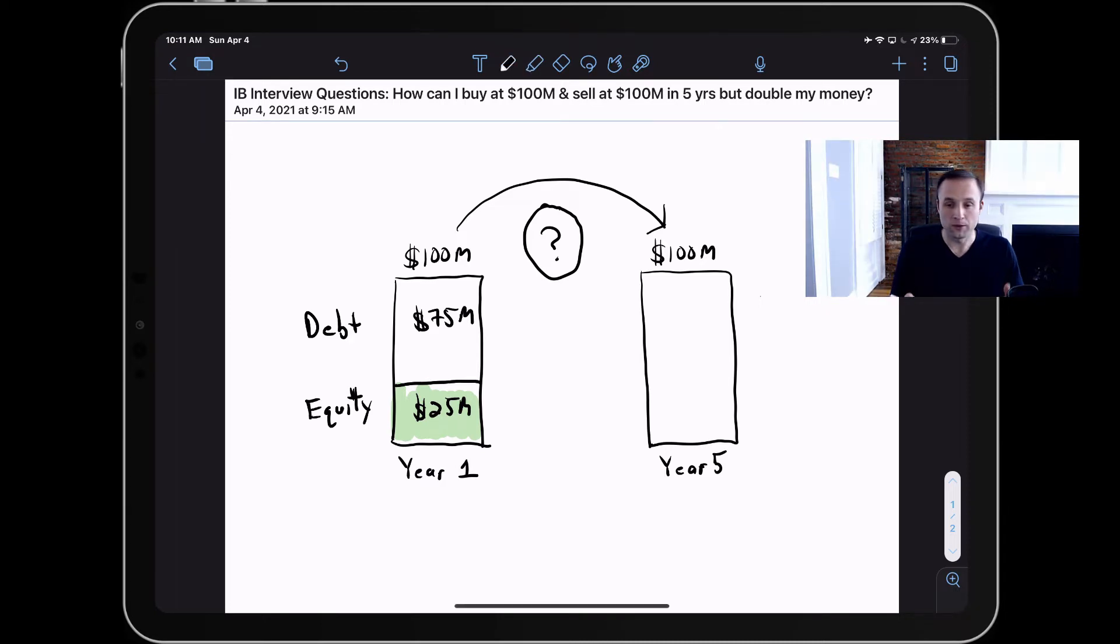And when you own a business, they generate cash flows. Let's imagine that after paying off all our expenses and our interest and so on, that this business generates a cash flow over the course of the five years of twenty-five million dollars. In that case, we could use the twenty-five million dollars to pay down our debt.